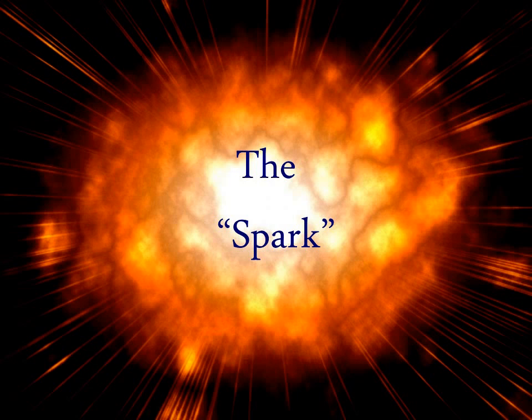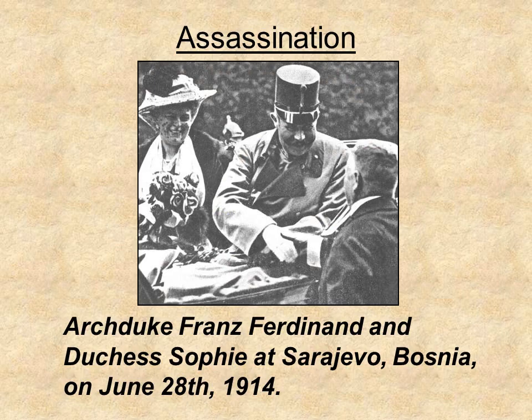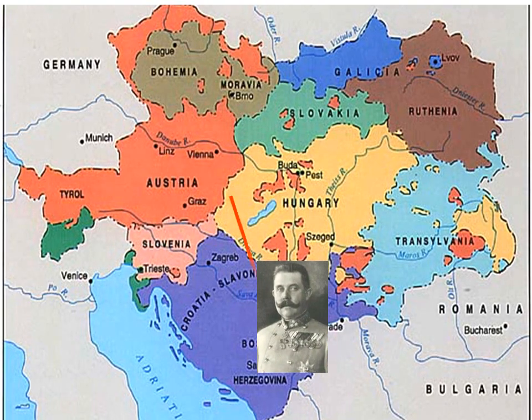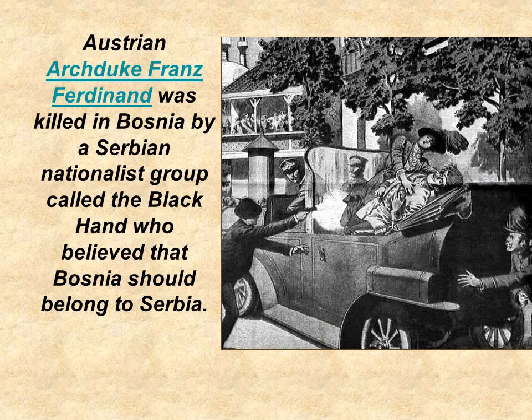The main immediate cause of World War I was the assassination of Archduke Franz Ferdinand and Duchess Sophia at Sarajevo, Bosnia on the 28th of June 1914, which started the World War. They were killed by a Serbian nationalist group called the Black Hand, which believed that Bosnia belonged to Serbia.